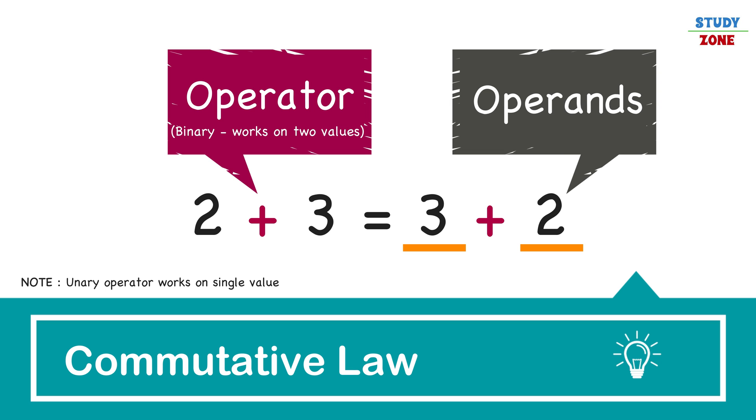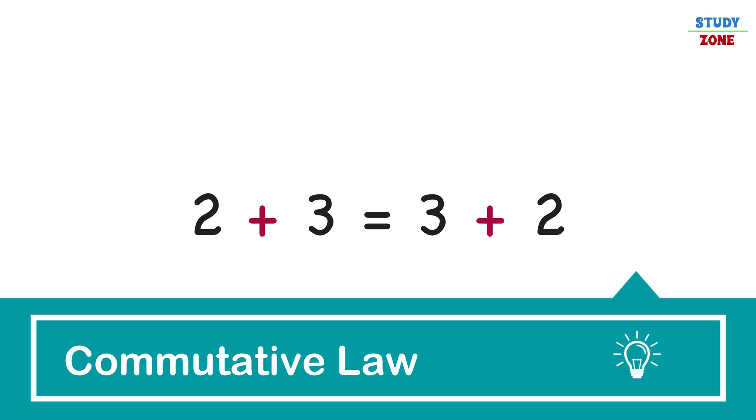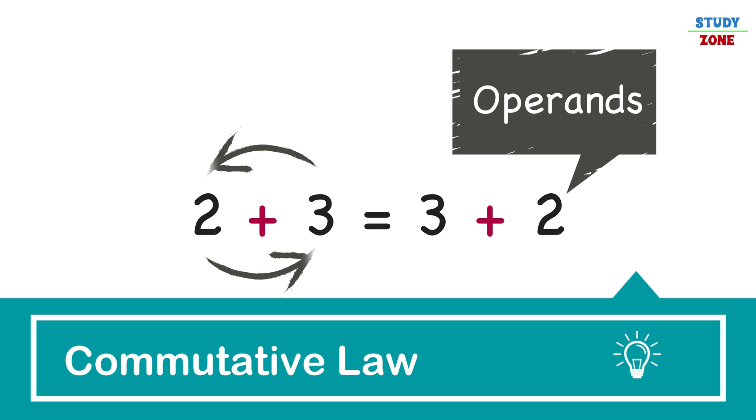Let's talk about commutative law now. Commute means move around, go from one place to another place. Similarly, if the operands move to either side of the operator without affecting the output, we call it commutative.